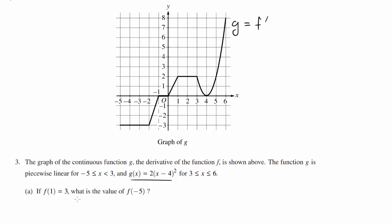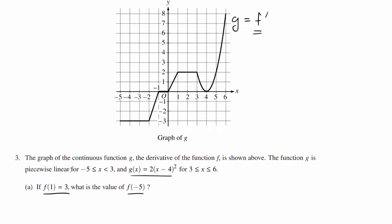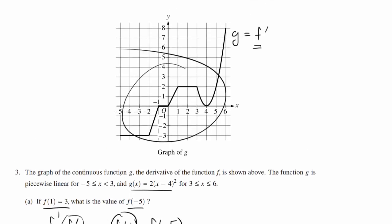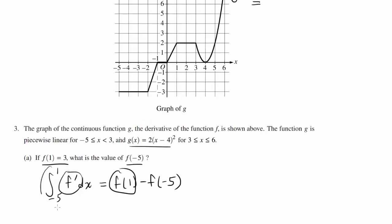What do we have to do? We have to find f of negative 5, given that f of 1 is 3. Well, we have the graph of f prime given to us. And if you're going backwards to the values of f, you may think of definite integration. Because when you integrate f prime from negative 5 to 1, we get f of 1 minus f of negative 5, by the Fundamental Theorem of Calculus.